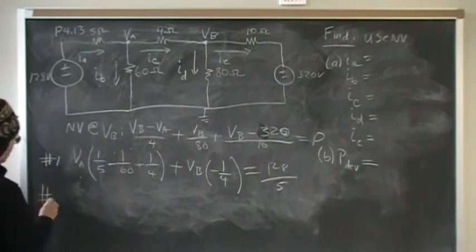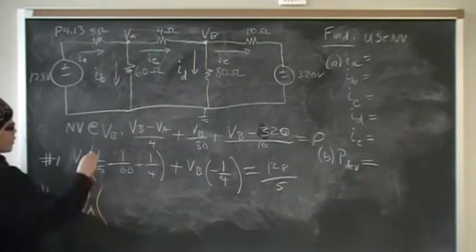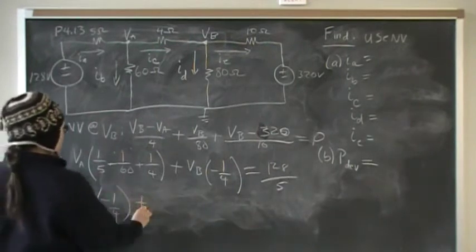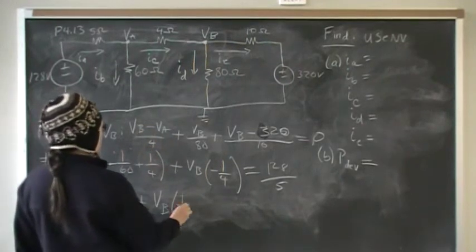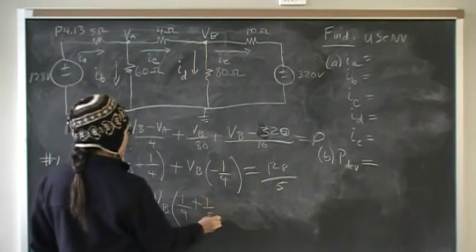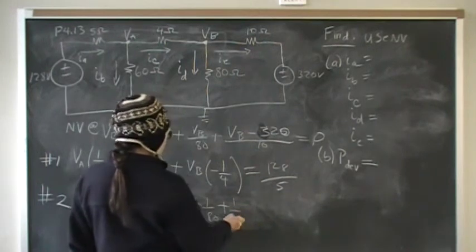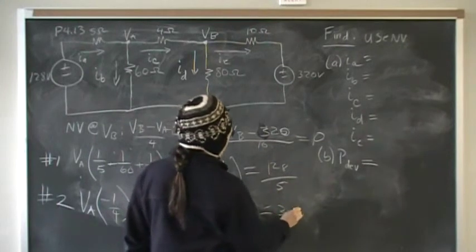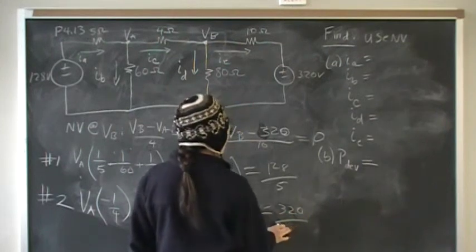Now, for my second equation, I'm going to group all the coefficients of my VA together, and there's only one, it's going to be negative one-fourth, plus my coefficients for VB. I have one-fourth here, plus 1 over 80, plus 1 over 10. I'm going to move the constants over there. I'm going to have one constant as 320 over 10.